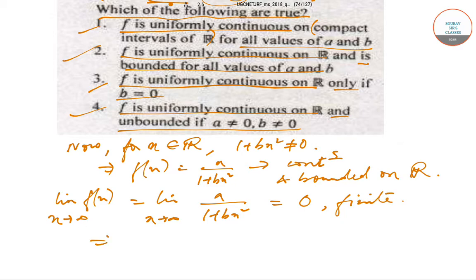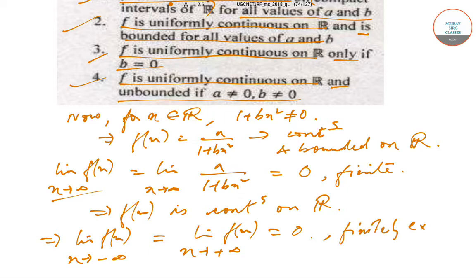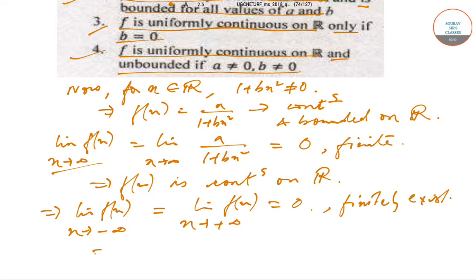Therefore we can say that f(x) is continuous on R. If limit f(x) exists, that implies limit f(x) as x → -∞ equals limit f(x) as x → +∞, and both of these values equal 0 and finitely exist. So that implies that f(x) is uniformly continuous on R.